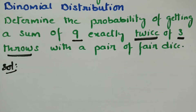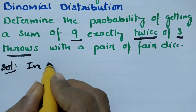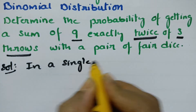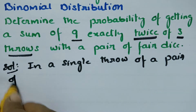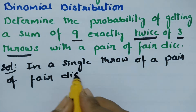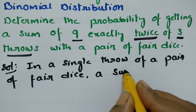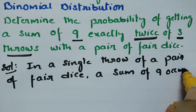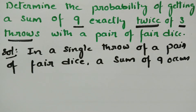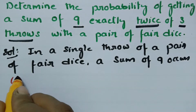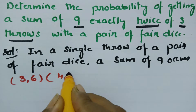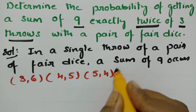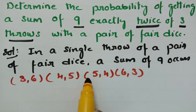In a single throw of a pair of fair dice, a sum of 9 occurs when: on the first die it is 3 and on the second die it is 6 (3+6=9), and also 4+5=9, 5+4=9, and 6+3=9. So these are the four possibilities of getting a sum of 9 when a pair of fair dice is thrown.